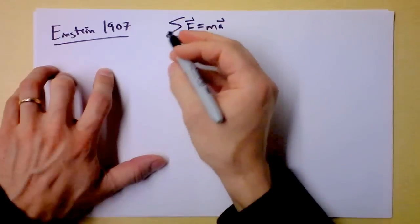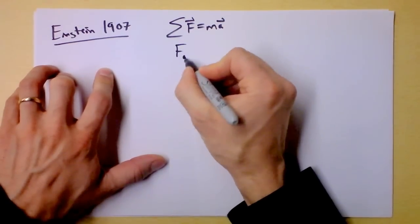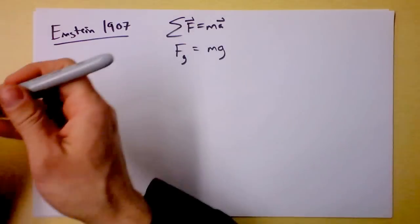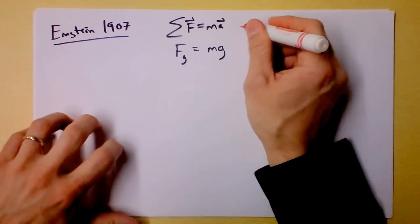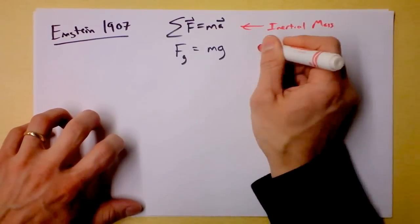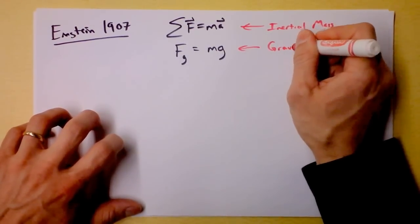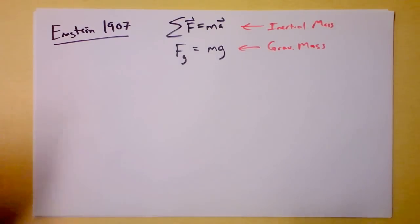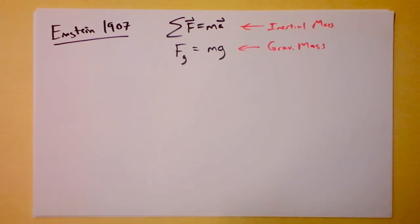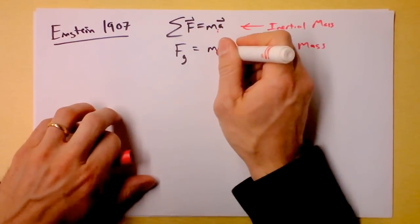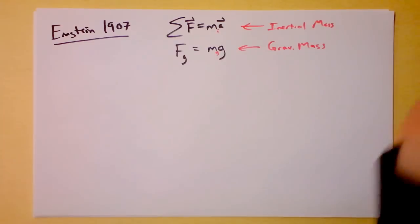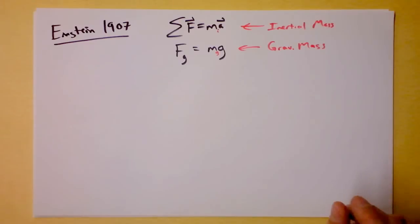F equals ma — Newton's second law — and the force of gravity which is M times g. He thought it was interesting that the mass in F=ma is what we'd call inertial mass, and the mass in the gravity equation is gravitational mass. These two masses happen to be exactly the same thing. These equations are different, and there's no reason they should both be M — you could call them M-sub-i and M-sub-g — but there's no point because they are exactly the same.